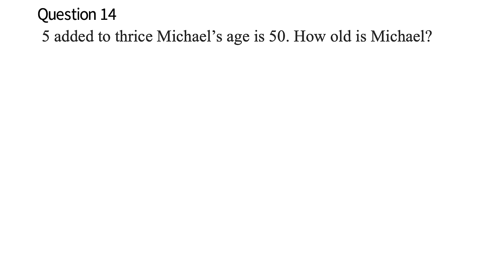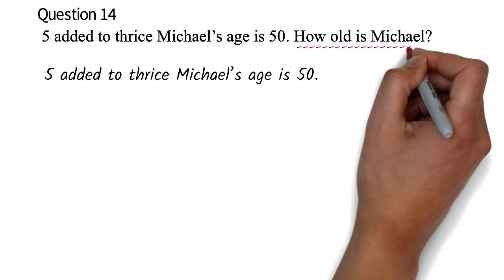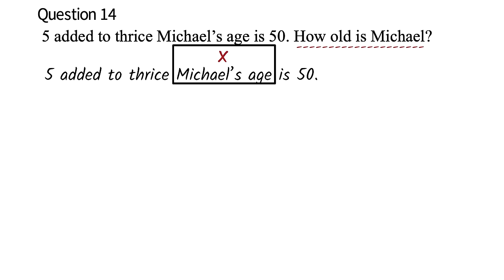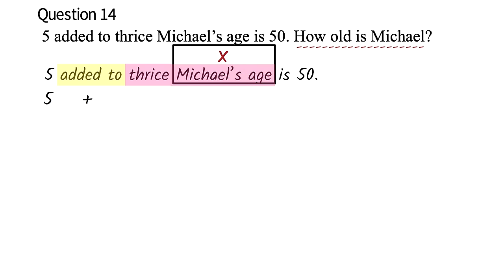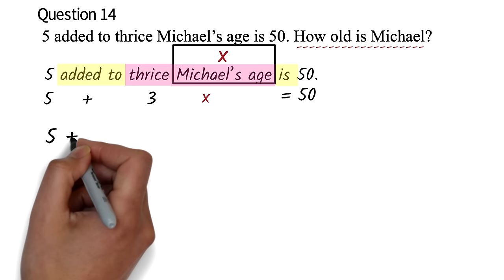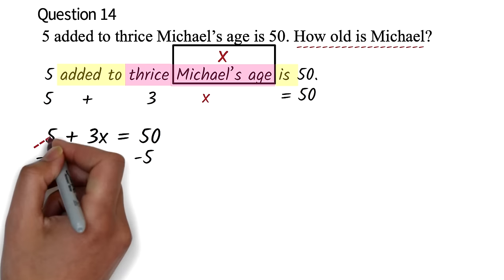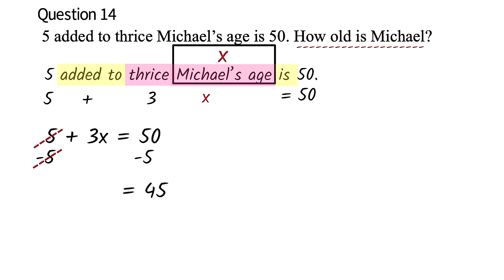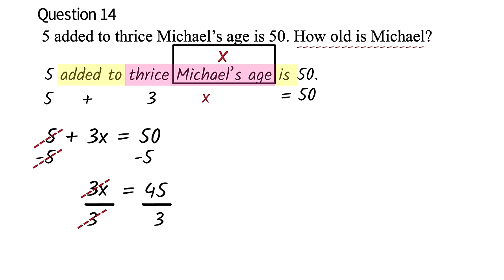Question 14: 5 added to thrice Michael's age is 50. How old is Michael? Start by identifying the unknown and representing it with a letter. The unknown is Michael's age — let's say x. Now translate: 'added to' means addition, 'thrice' means 3 times, so thrice Michael's age is 3x, and 'is' means equal to. This gives us 5 plus 3x equals 50. We subtract 5 from both sides — 50 minus 5 is 45 — giving 3x equals 45. Then we divide both sides by 3 — 45 divided by 3 is 15. Therefore, x equals 15. Michael's age is 15 years.